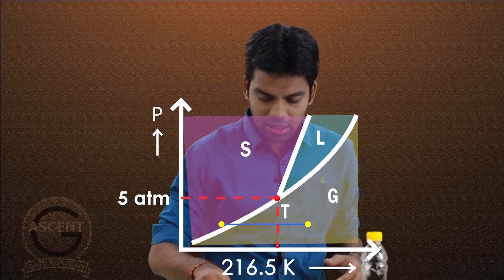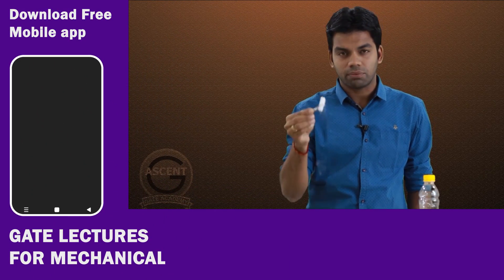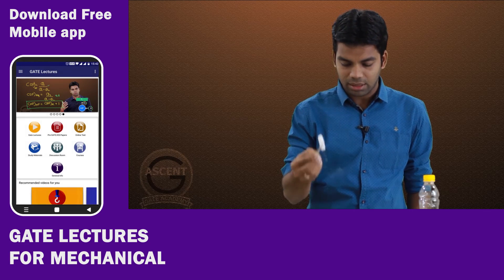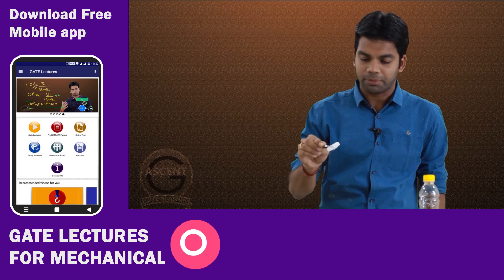When the dry ice vaporizes, it absorbs latent heat of vaporization from the surroundings. The sublimation temperature of dry ice is minus 78°C — an extremely low temperature. If you were to hold it in your hand, it would cause a cold burn — similar to a hot burn but from extreme cold.